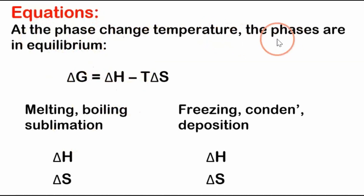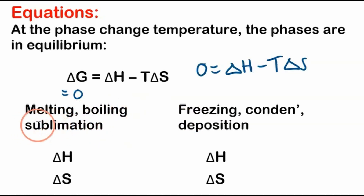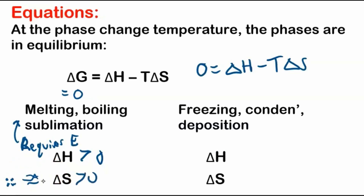At the phase change temperature, the phases are in equilibrium. This is the Gibbs free energy equation, and at equilibrium, the change in Gibbs free energy is equal to zero. So we have: zero equals the change in enthalpy minus temperature times the change in entropy. Now we have various phase changes. If we have melting, boiling, or sublimation, this requires energy — it's endothermic, so the change in enthalpy is greater than zero. And the entropy increases because, for example in melting, we go from a solid to a liquid with more possible arrangements and more disorder.